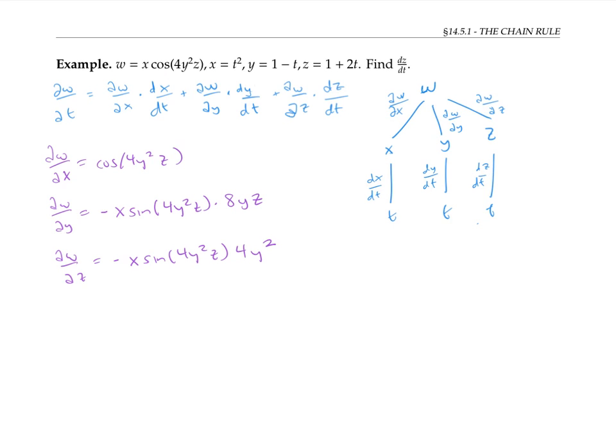We also have that dx/dt is 2t, dy/dt is negative one, and dz/dt is two. Putting this all together, we get an expression for dw/dt. I'll simplify this a little.